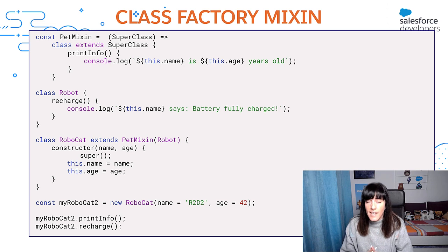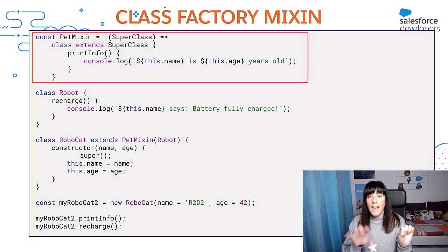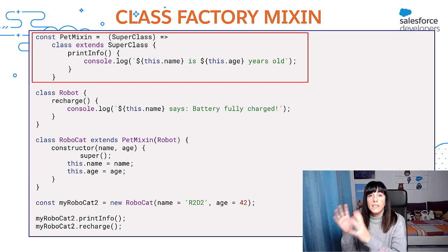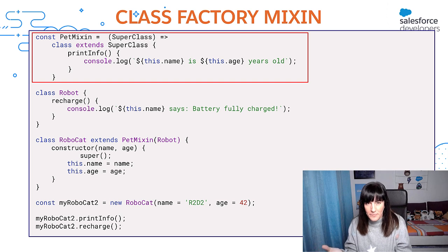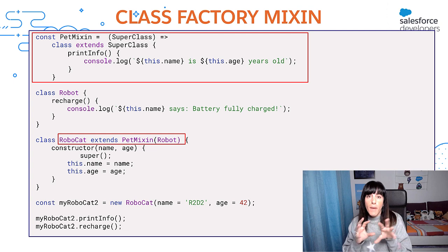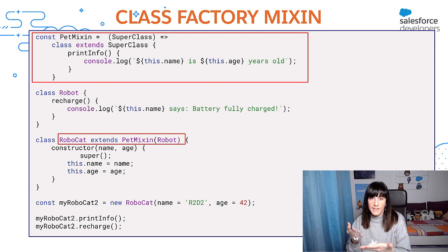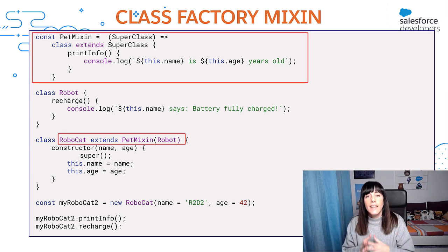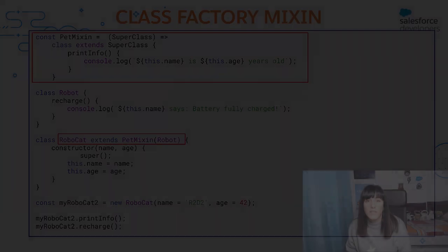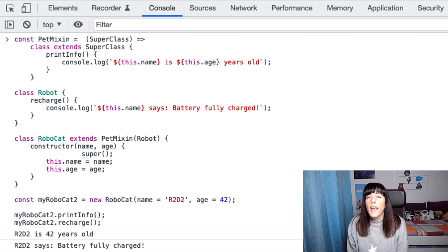And the answer is yes! We can use another mixin pattern for that. In this case, the mixin is a class factory. The class factory returns a class that will extend the superclass passed in, and the mixin will add methods to that class. In our case, the pet mixin methods will be added to the robot class, the superclass. If you want to use the class that's returned by that class factory, you simply have to extend it, and that's it. Let's execute the code and see how it works. R2D2 was able to bring info and to recharge using a mixin.